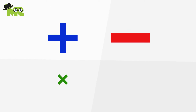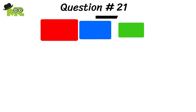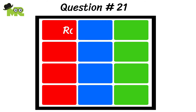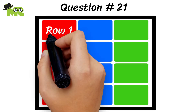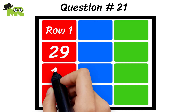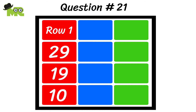Let's go to question number 21. Use your math skills to find the answer for this question. If we have three rows with three boxes in each row — in row one, the first box has the number 29, the second box has the number 19, and the third box has the number 10.